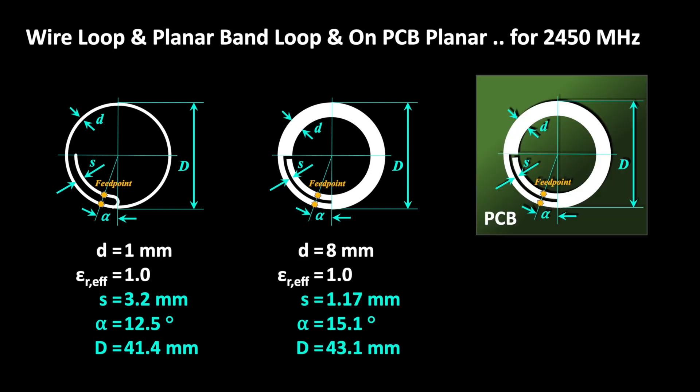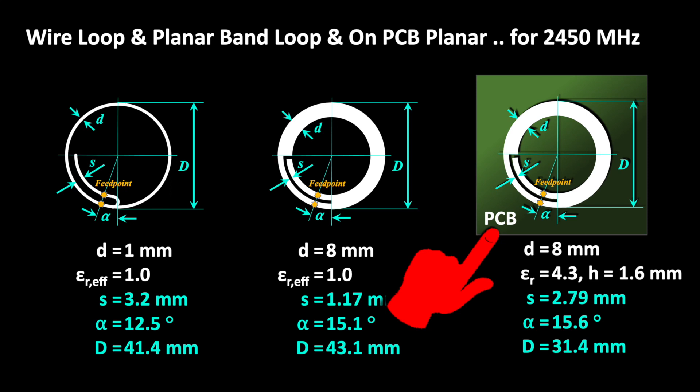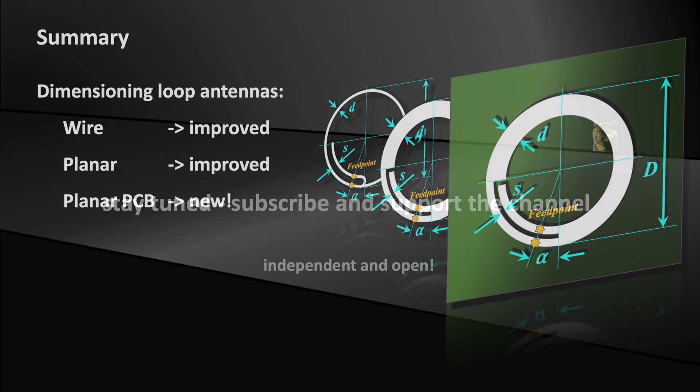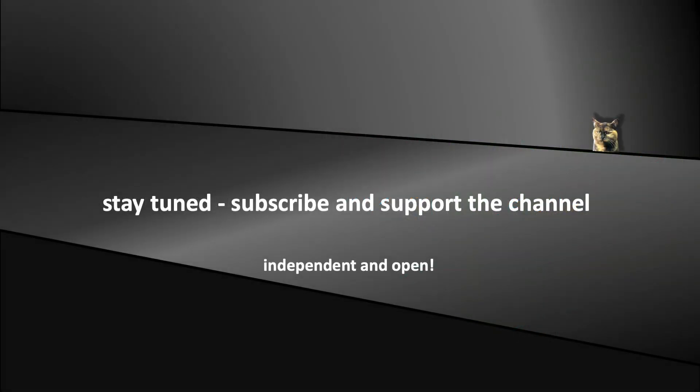We can now basically calculate three different types of our loop antenna with our Excel tool. Here I am comparing the results for 2450 MHz. As mentioned, the calculation model is improved for the first two types. And the PCB antenna is added. I hope the tool will help you with your own projects. I will be setting up the PCB antenna in an upcoming episode, and of course I will be measuring it too. Now stay tuned and don't forget to support the channel.